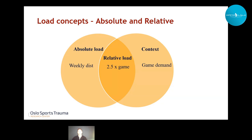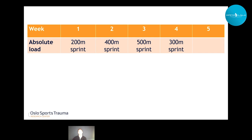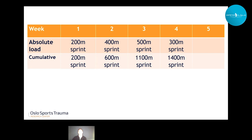So a week's distance could be 25 miles of running, or it could be 2.5 times the game demand. Another context we can apply is the load history, which enables us to see the weekly distance in light of what we've done in previous weeks — for example, that's a 200% change from the week before. Absolute load is simply the total amount the athlete has performed, and it can also be expressed as cumulative distance from one week to another.